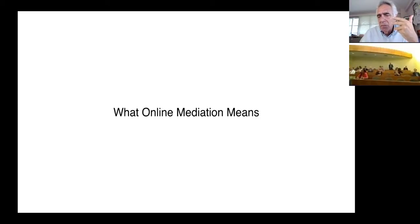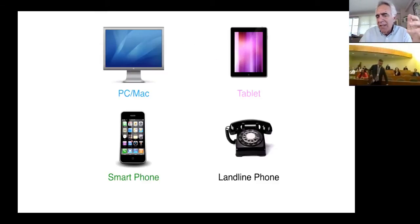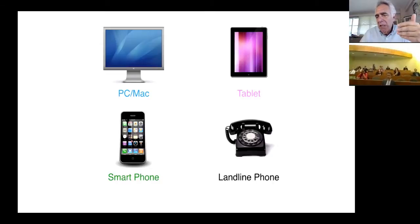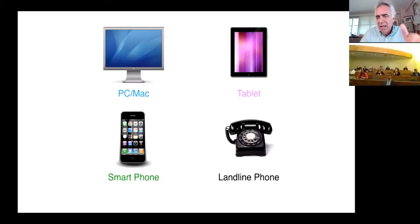Online mediation means that the parties can be anywhere — different cities, different states, different countries, different continents. They can be connected with any device: a PC, a Mac, an iPad, iPhone, Android, tablet, smartphone, or even a landline phone. For example, if they are in the United States, they will dial our online mediation room number and can participate. If they are in France, New Zealand, or Canada, they dial a different number and participate by phone. As long as they have any of these devices and a good connection, they can participate in an online mediation.